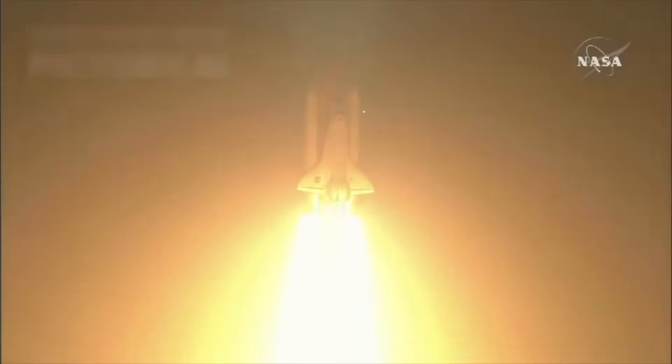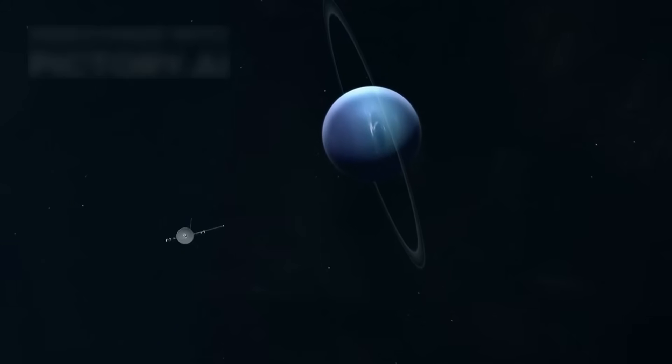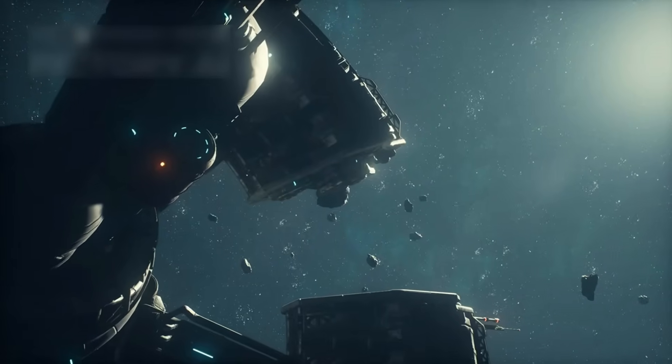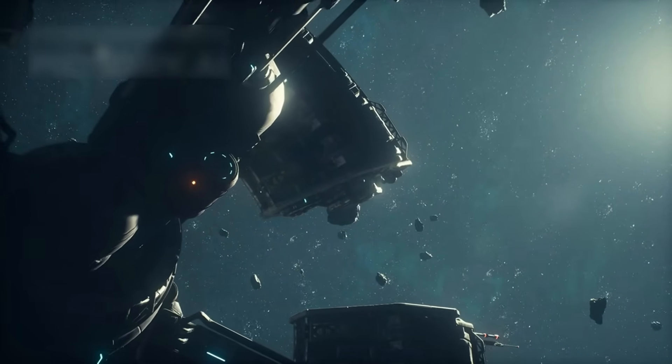But it didn't stop there. Voyager kept flying, past Uranus, Neptune, and even Pluto. In 2012, it crossed a boundary called the heliopause, the edge of our sun's influence, and entered interstellar space. This was the first time a human-made object had done so.